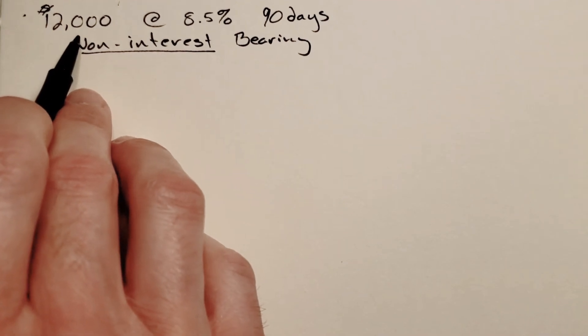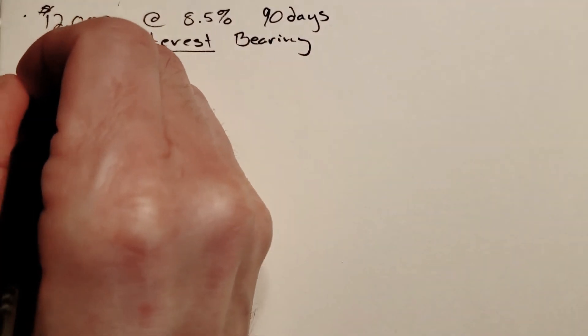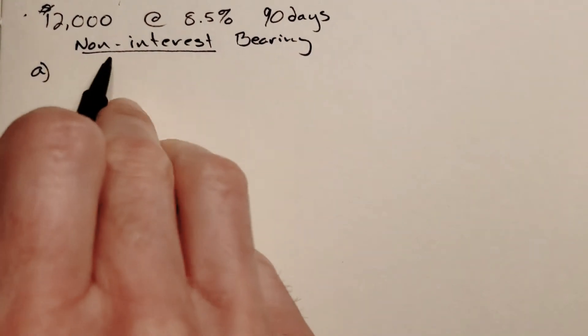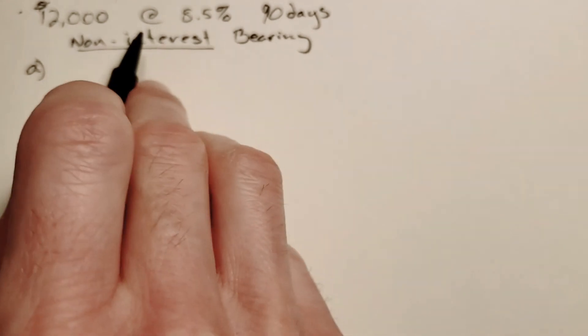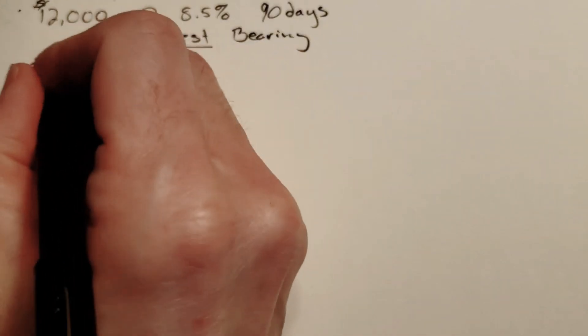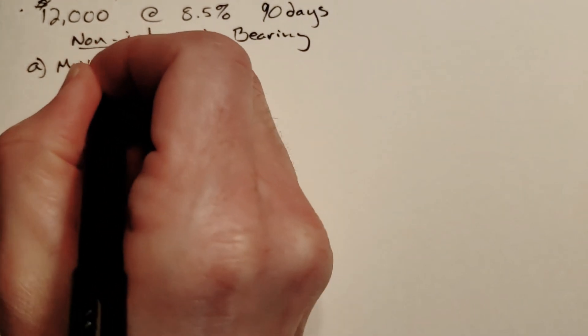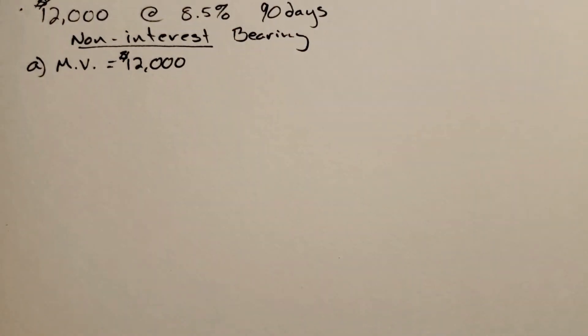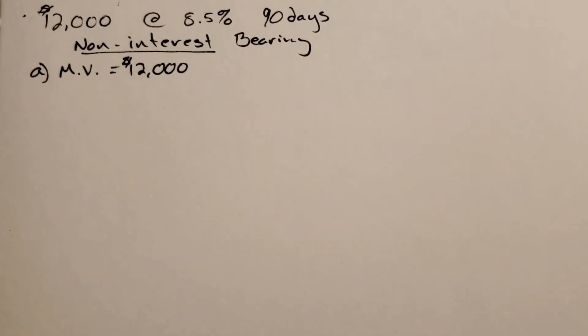The questions that go along with this - part a says what is the maturity value. In a non-interest bearing loan, the maturity value is the face value, so the maturity value equals $12,000, which is different from what we did before. In an interest bearing loan it was your face value plus your interest. This time it's basically what you're asking for.